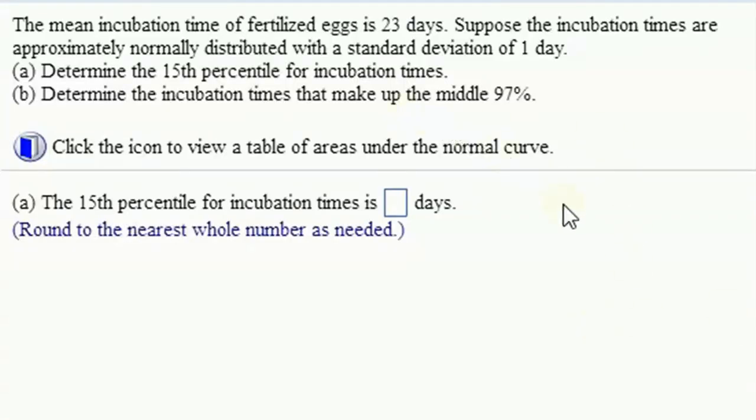The mean incubation time of fertilized eggs is 23 days. Suppose the incubation times are approximately normally distributed with a standard deviation of one day. Determine the 15th percentile, so we're finding percentiles.